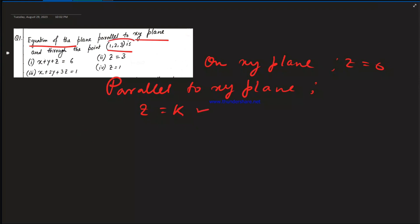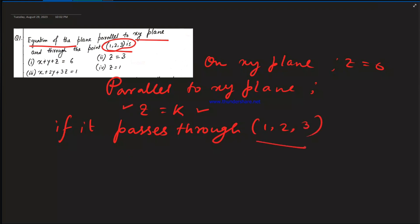A plane parallel to the xy-plane passing through (1, 2, 3): the plane contains the z-coordinate k. Since it passes through (1, 2, 3), the plane must satisfy k = 3. So the required equation is z = 3.